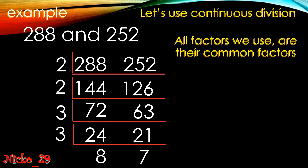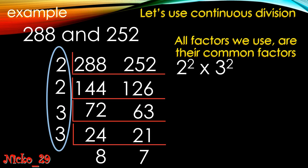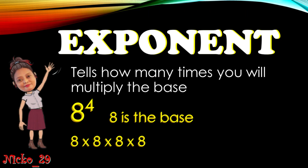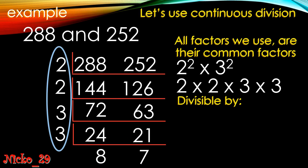All the divisors we used are common factors. We used 2 squared times 3 squared — meaning two 2s and two 3s — so 2 × 2 × 3 × 3. The small number written next to the base is the exponent, which tells how many times you multiply the base. So 2 squared means 2 × 2, and 3 squared means 3 × 3. Using these, we can identify the common factors by combining them.